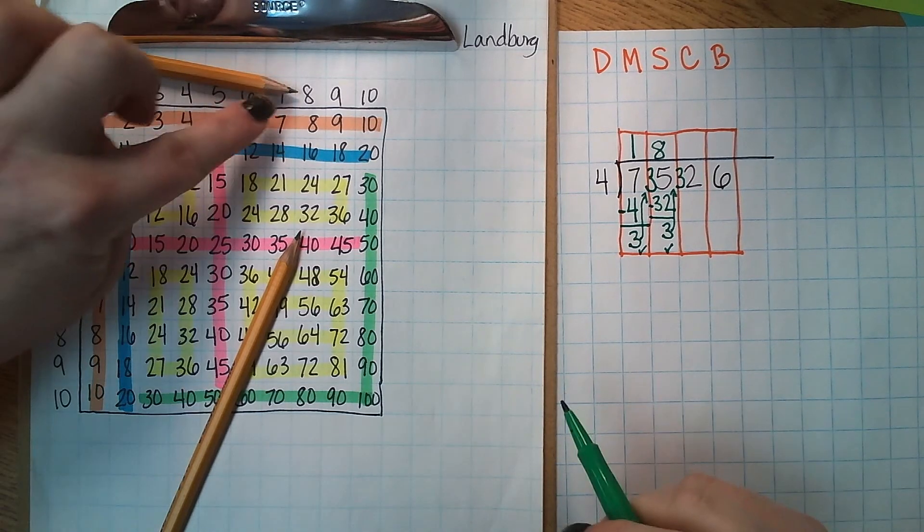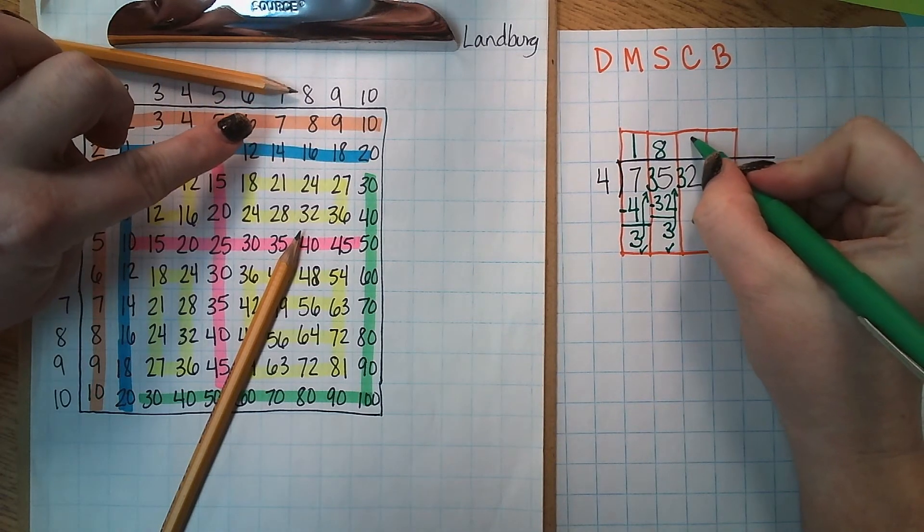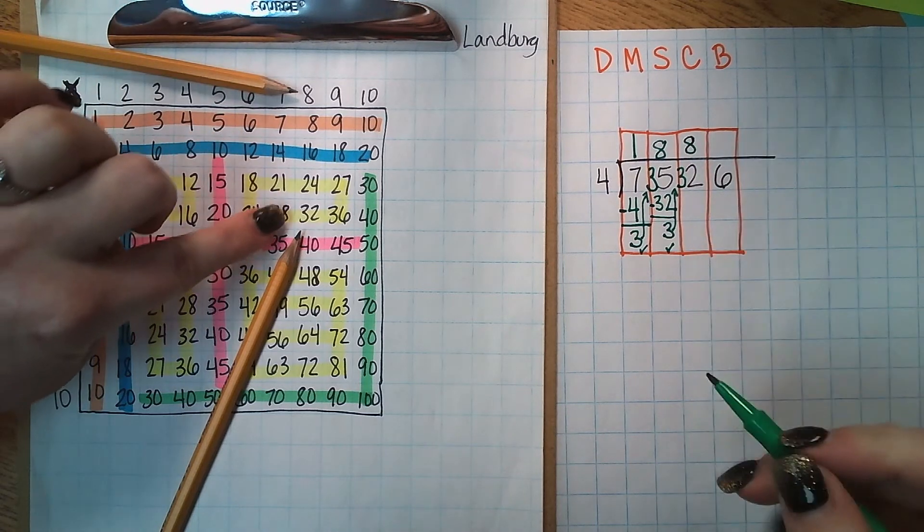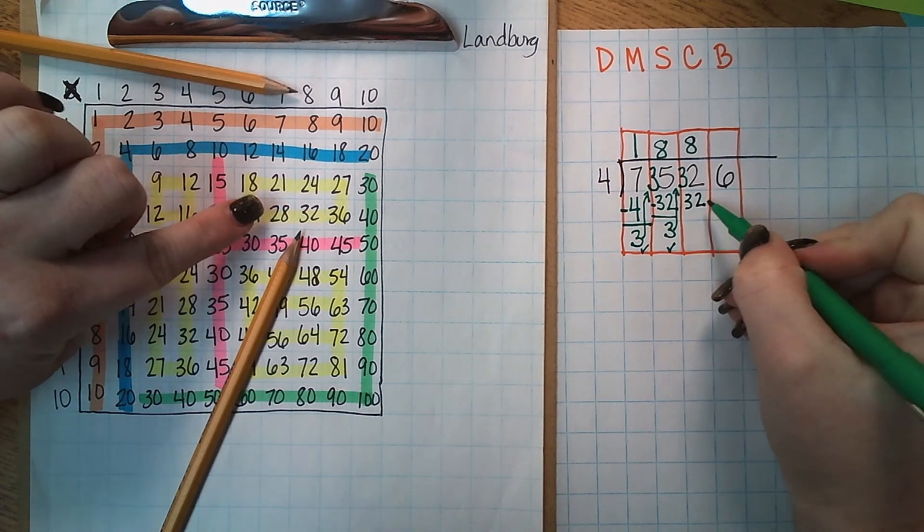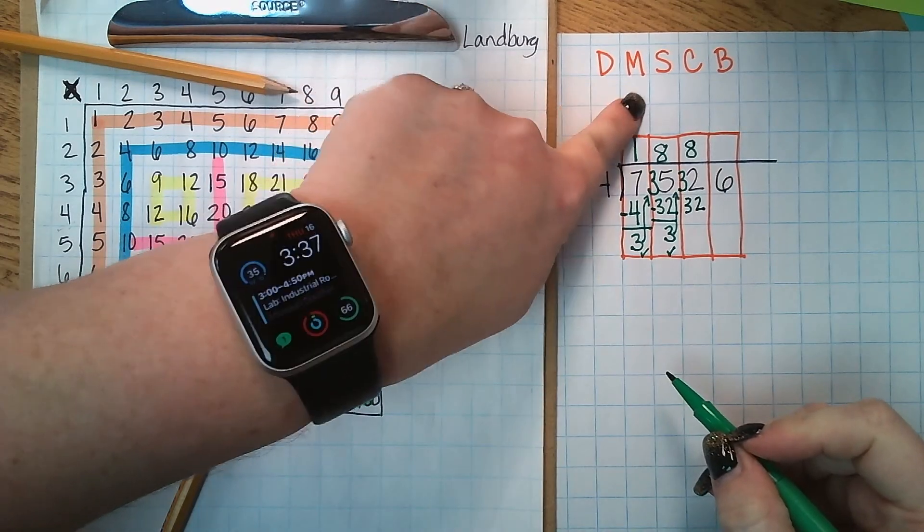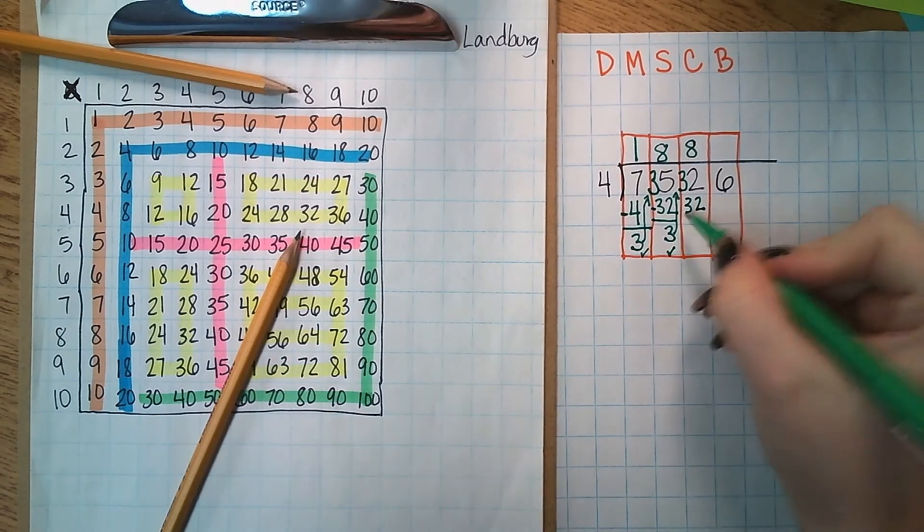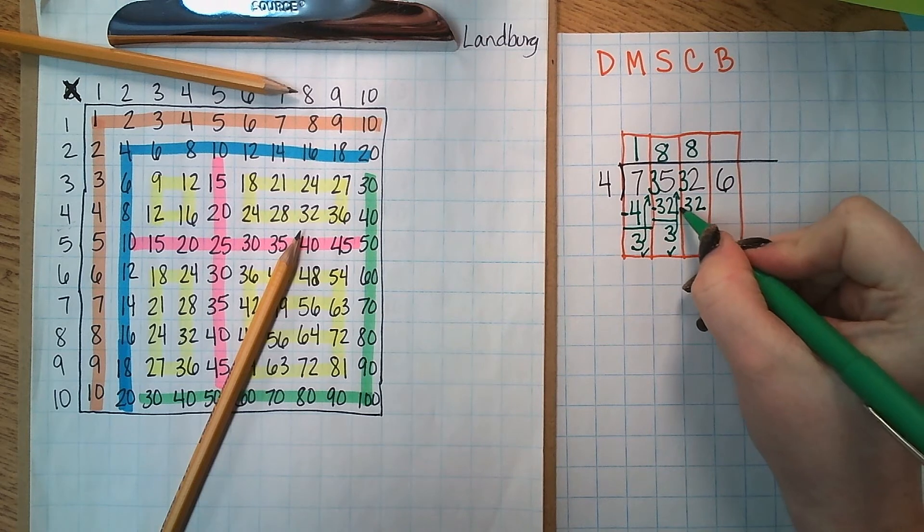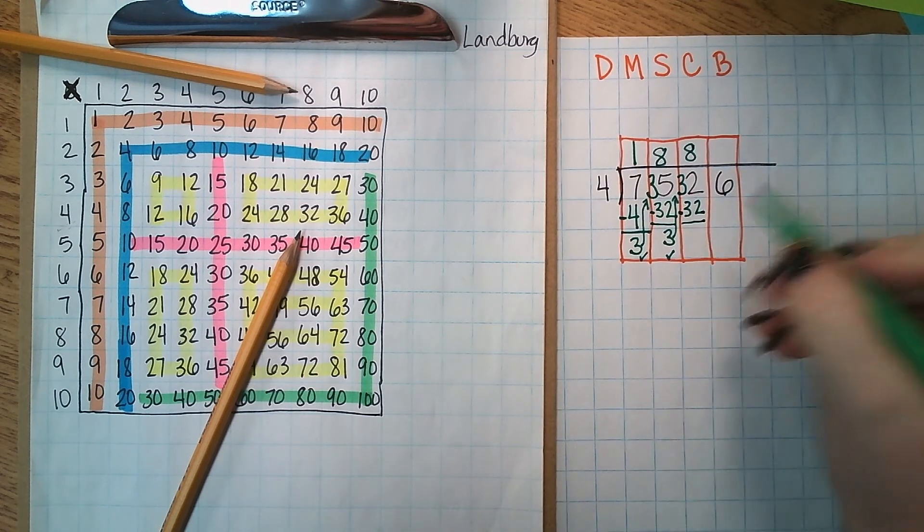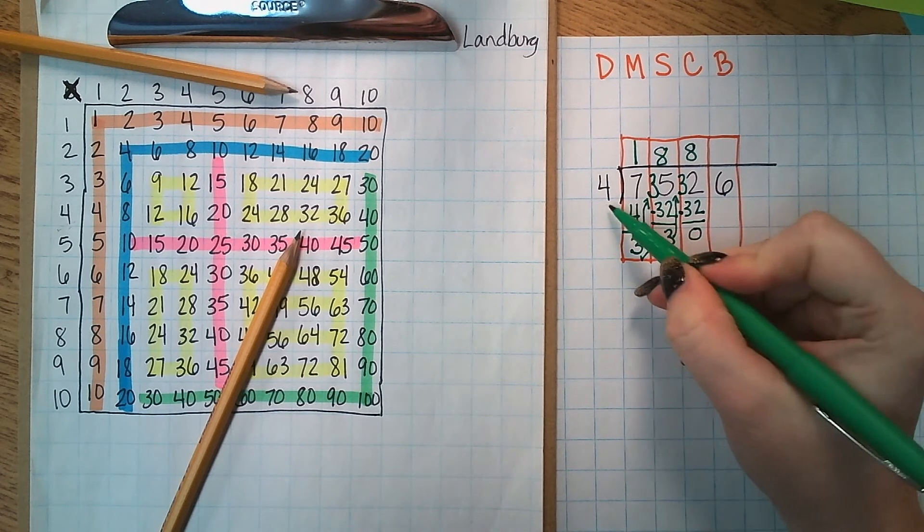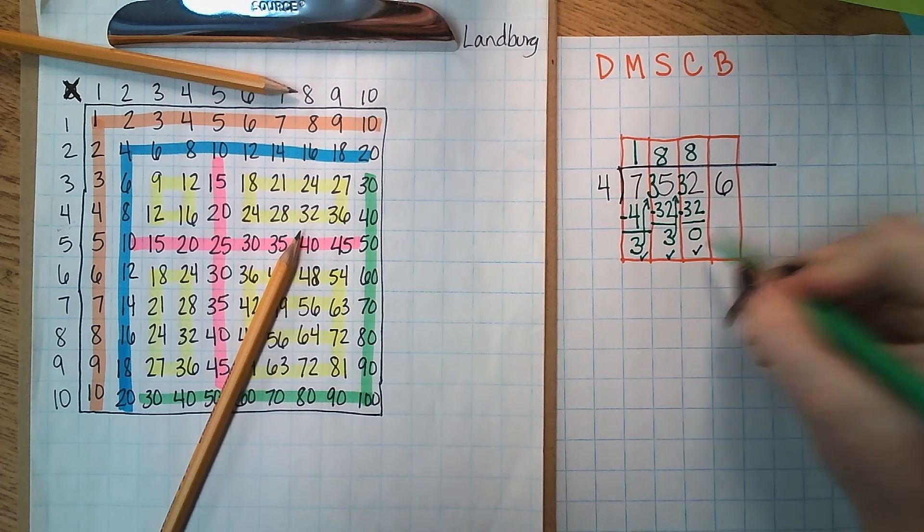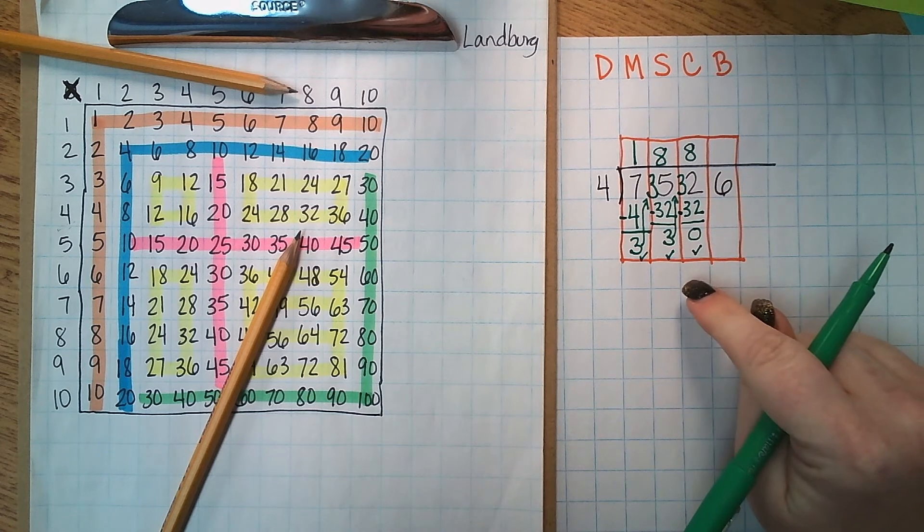So I know that my number that's going to go up here on top is 8. My number that's going to go down here below it is 32. I've taken care of my divide and my multiply step. So now I'm ready to subtract. 32 minus 32 is 0. Is 0 smaller than 4? Yes it is. So I checked my remainder.